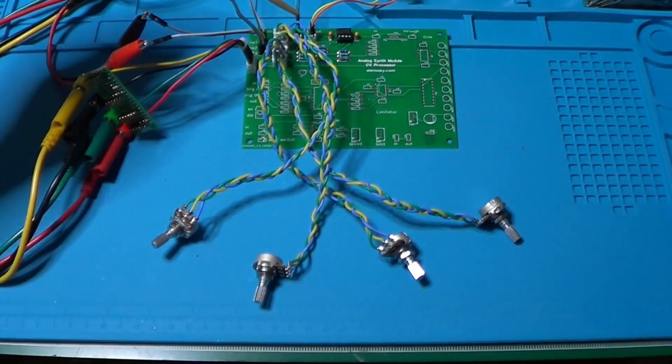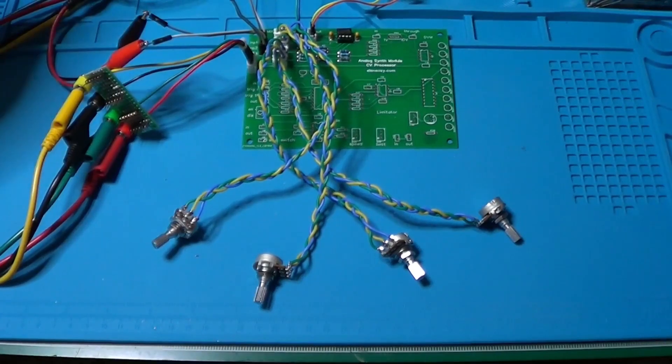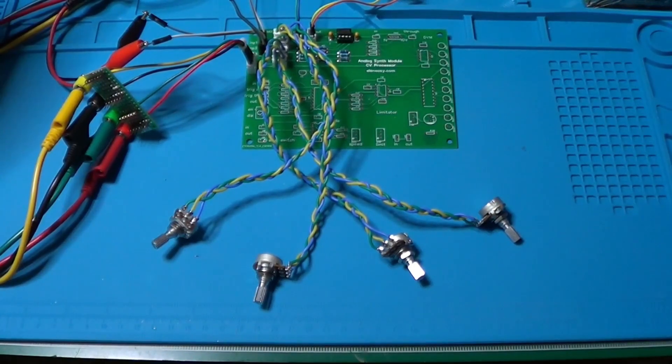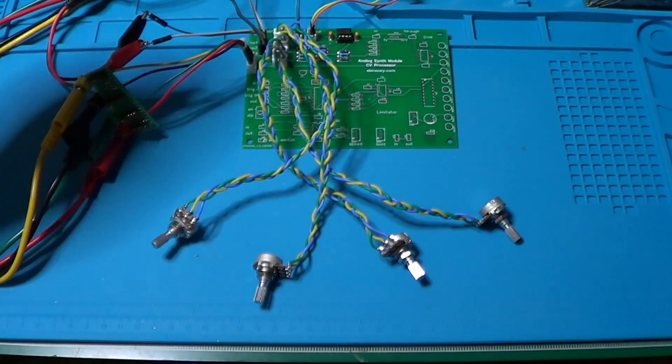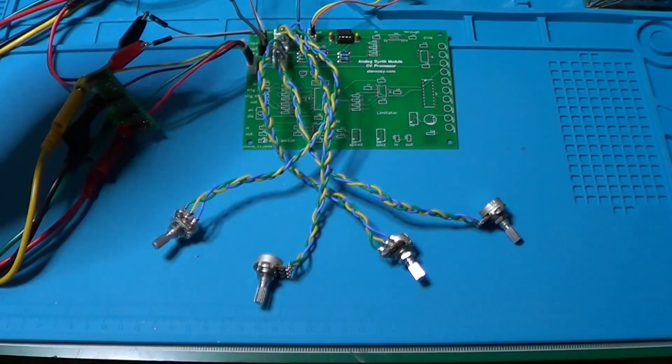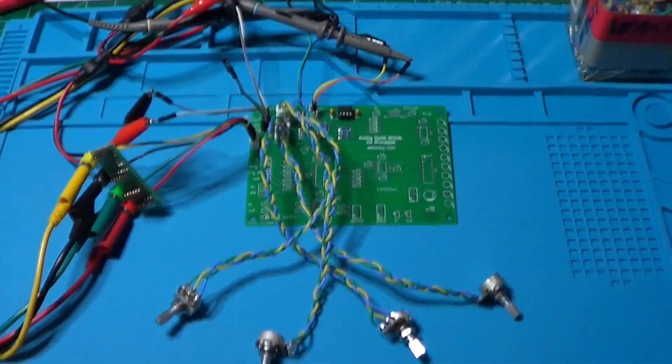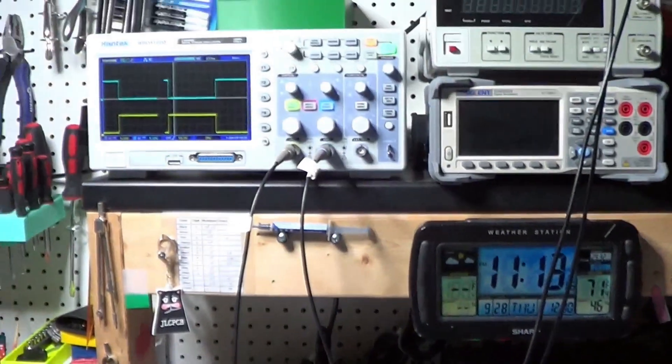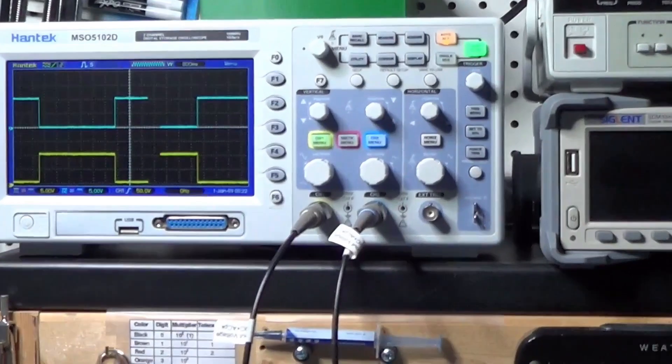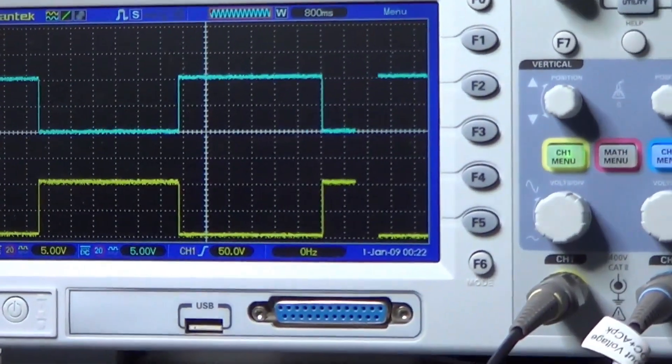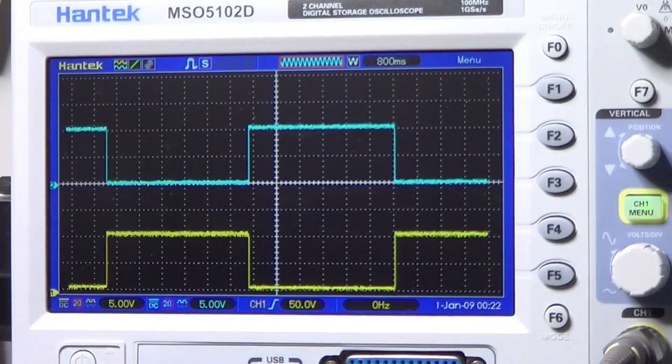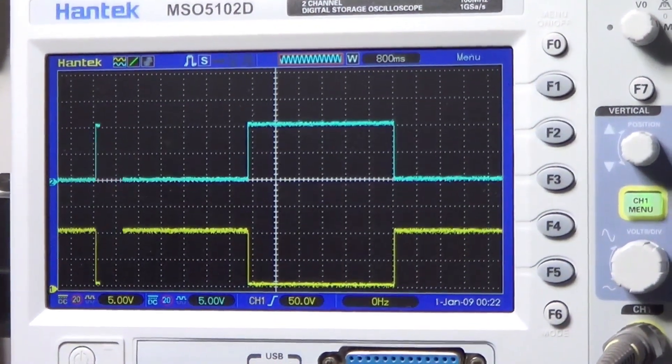And finally, the mixer output is connected to channel 1 of the oscilloscope, the yellow trace, and the inverted output is connected instead to channel 2, the blue trace, so we can see both of them at the same time and compare. So let's take a look at the oscilloscope. And what we see now is a square wave, and that's because we have the level of input 2 set to max, while the level of input 1 is set to the minimum, which means no signal.